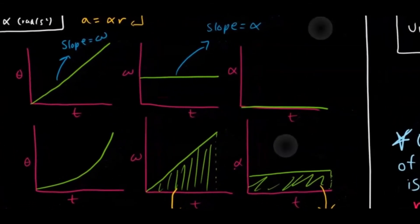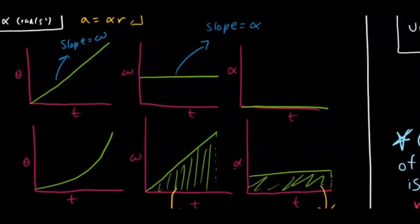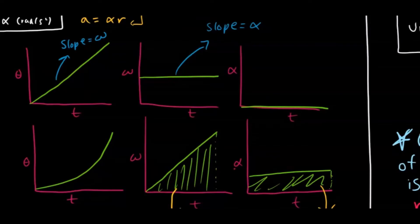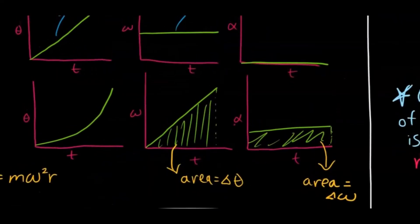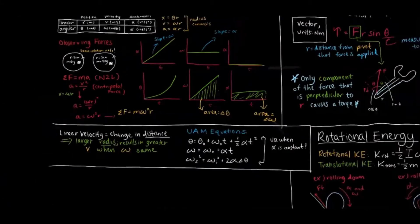Alright, so motion graphs. This is very similar to just linear kinematics. You can see some examples of position over time, angular velocity over time, and angular acceleration over time. So the slope of each one corresponds to each other. The slope of position over time is the angular velocity, and then the slope of the angular velocity over time is the angular acceleration. And then as for the areas, the area of the angular acceleration over time is the change—that's very important—change in angular velocity, and then the area of the angular velocity over time is the change in angular position.